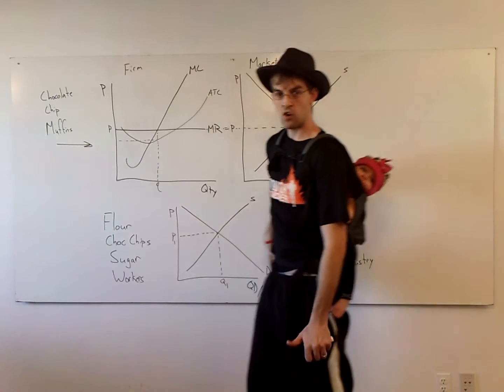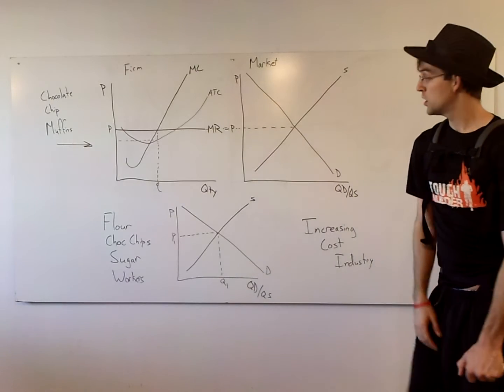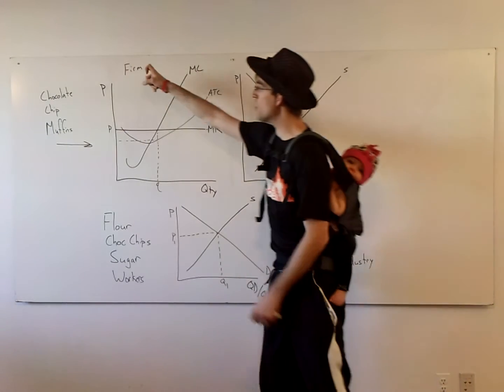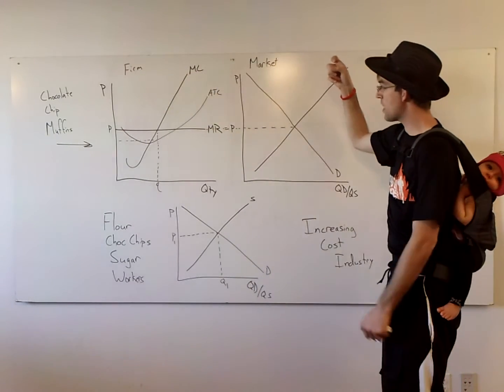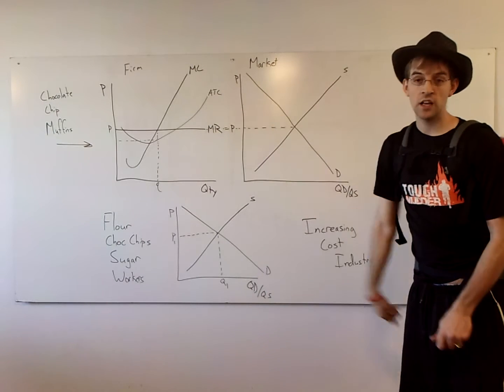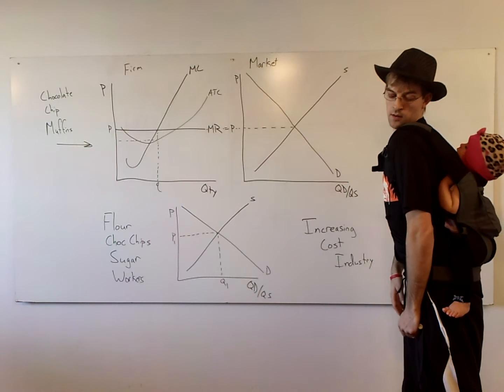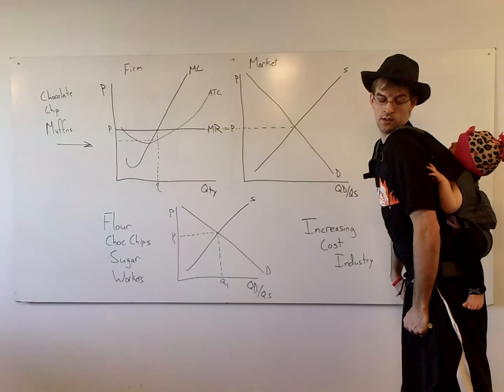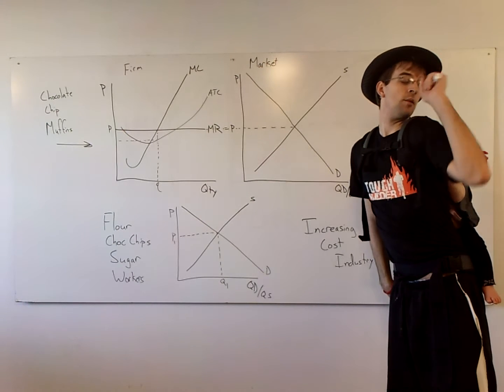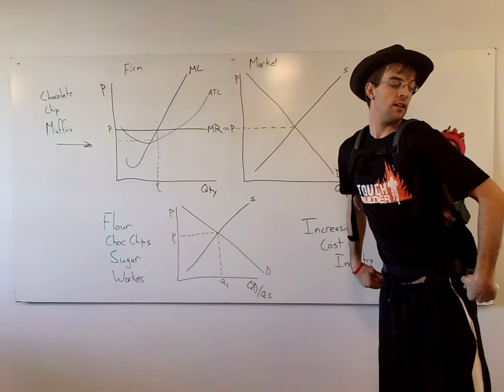I want you to ignore what you see on the bottom. Up top should look very familiar to you. So we have a perfectly competitive firm, and we have their side-by-side graph with the market here. Take a second. That is a perfectly competitive firm. Somebody fill in the blanks for me. It's a perfectly competitive firm earning a profit. Yes, Brooke Edson, profit earning perfectly competitive firm. You are correct. Good job.